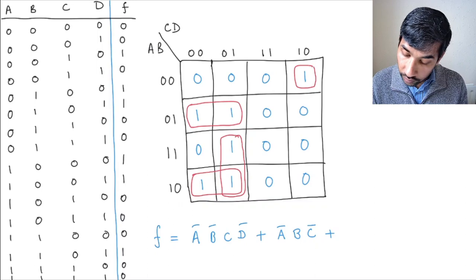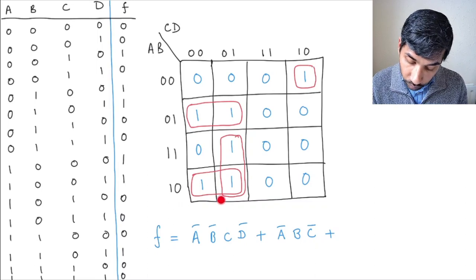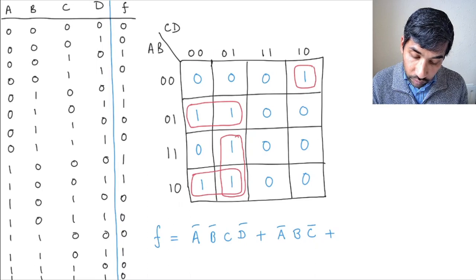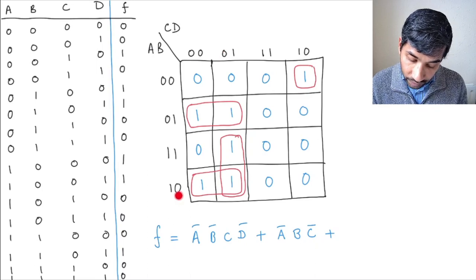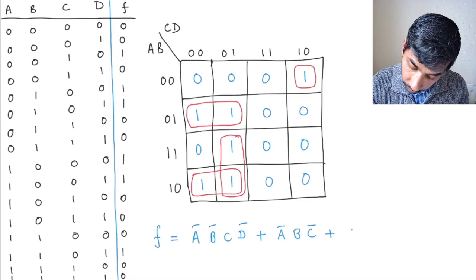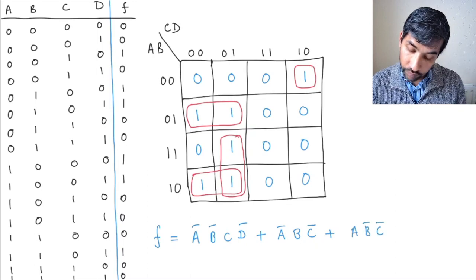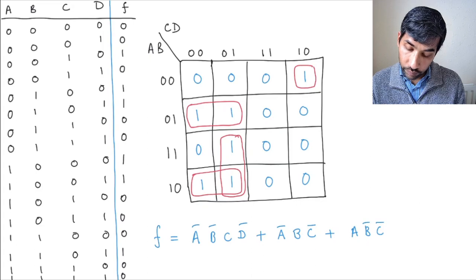let's write the equation for this group. In this case, again, D will disappear. You will have C-bar here and A, B-bar on this side. So you have A-bar, C-bar.